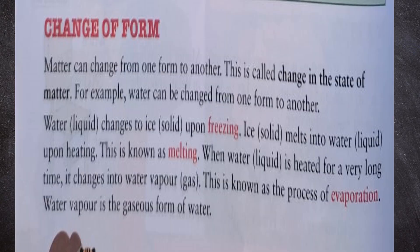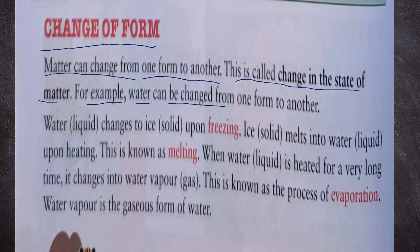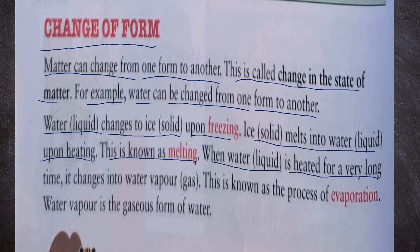Now, change of form. Matter can change from one form to another — this is called change in the state of matter. For example, water can be changed from one form to another. Water, which is liquid, changes to ice, which is solid, upon freezing. Ice, which is solid, melts into water, which is liquid, upon heating — this is known as melting. When water is heated for a very long time, it changes into water vapor, which is gas. This is known as evaporation.